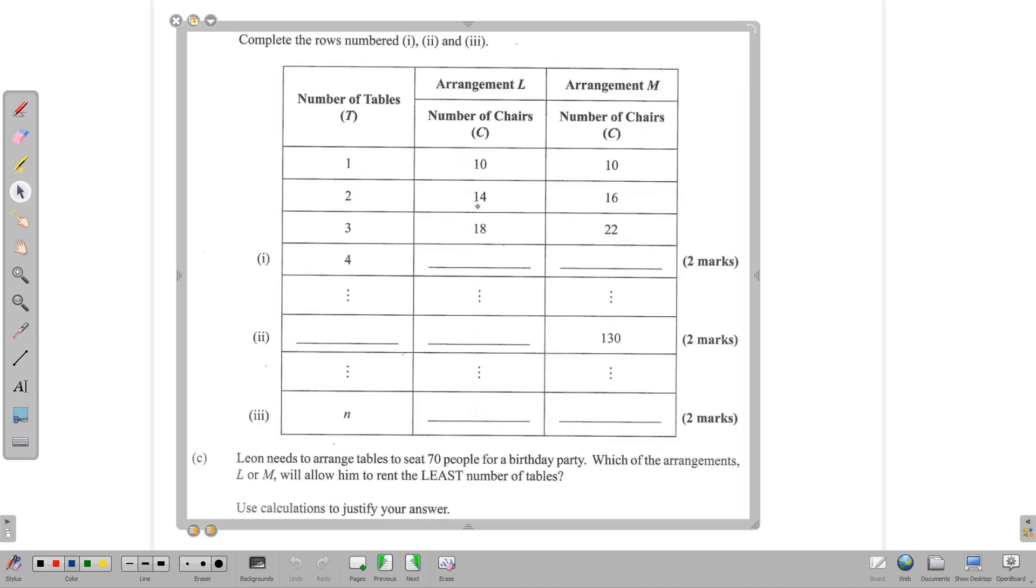Notice from between 10 to 14 and 14 to 18, we have a difference of four. So 14 minus 10 is four, 18 minus 14 is four. That four is something that we call a common difference. And we can use that common difference, four, to multiply the diagram number. So let's say four times one. And four times one here is four. However, the number of chairs we're getting here is 10, which means that we need to add 6 to our number here to get to the 10.